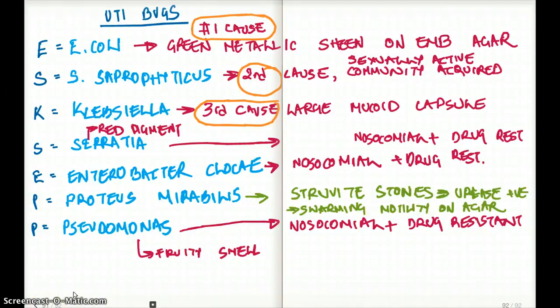Now let's quickly go over the entire thing really, really fast. So there is seven UTI bugs which are most common. The number one is E. coli, which is the leading cause of UTI. It causes a green metallic sheen on EMB agar.